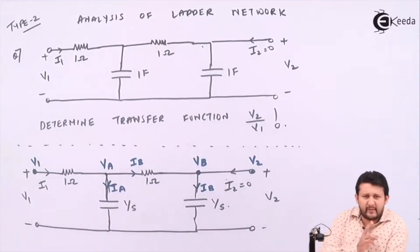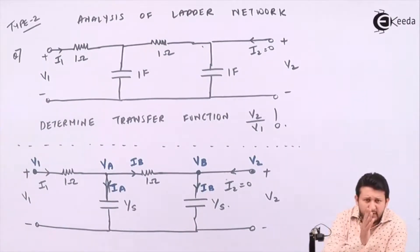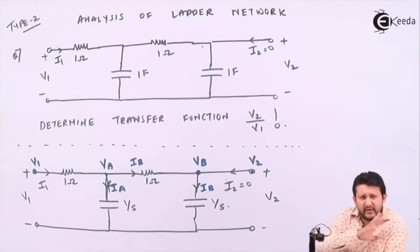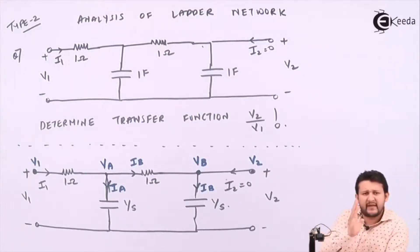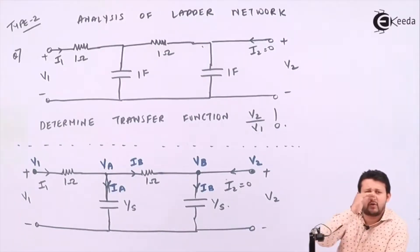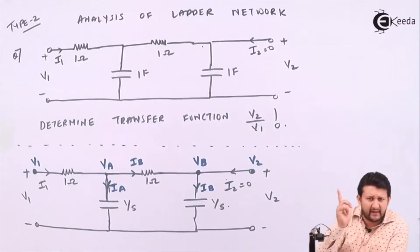Two things I need to remember for solving this: vertical and horizontal. That's the only thing we will be doing in this kind of problem. When I talk about vertical, I need to find current. When I talk about horizontal, I need to find voltage. Just keep that in mind — vertical means current, horizontal means voltage.